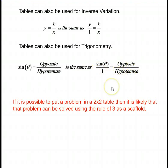So in the end, if it's possible to put a problem in a 2 by 2 table, then it's likely that that problem can be solved using the rule of three as a scaffold. Tables make ratio and proportion very easy.